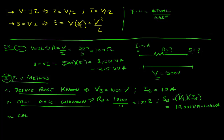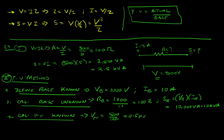Step three: calculate per unit values for the known quantities. For voltage: V_pu = actual / base = 500/1000 = 0.5 per unit. For current: I_pu = actual / base = 5/10 = 0.5 per unit. So both voltage and current are 0.5 per unit.